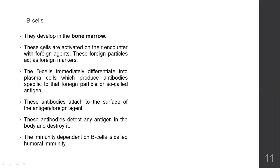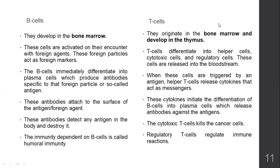T cells originate in bone marrow but develop in the thymus gland. T cells differentiate into helper cells, cytotoxic cells, or regulatory cells — their function is to destroy infected cells completely. They are not looking for antigens; they are looking for an infected cell that the antigen has infected. The thymus gland is present just below the throat and is usually active during childhood and early teenage years. After that, the thymus gland becomes inactive and reduces in size as you grow up.